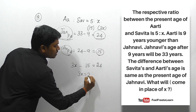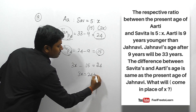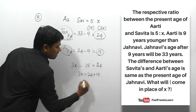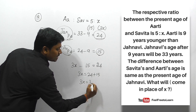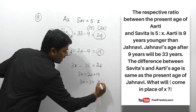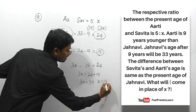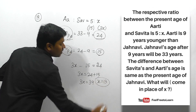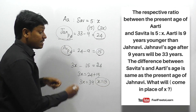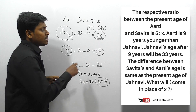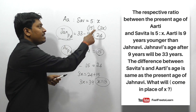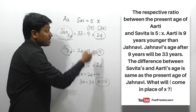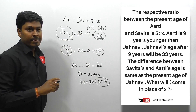So 3x = 24 + 15 = 39, giving x = 13. Our target was to find the value of x, and the answer is x = 13.